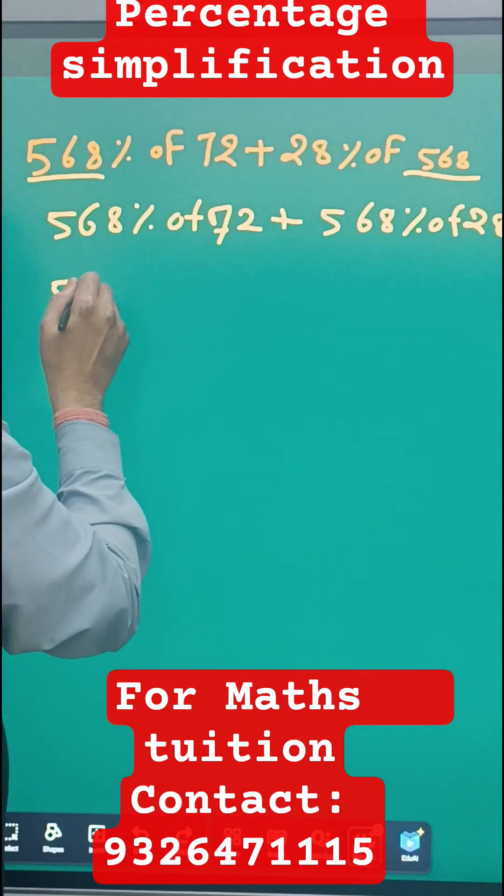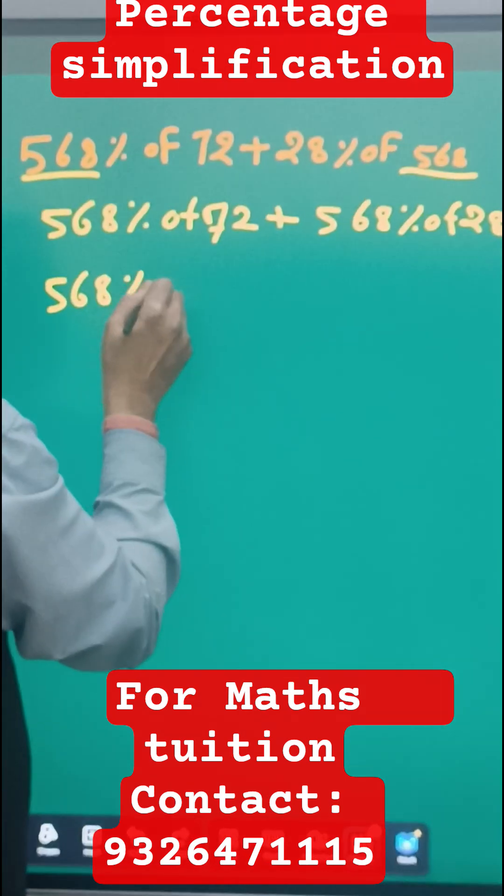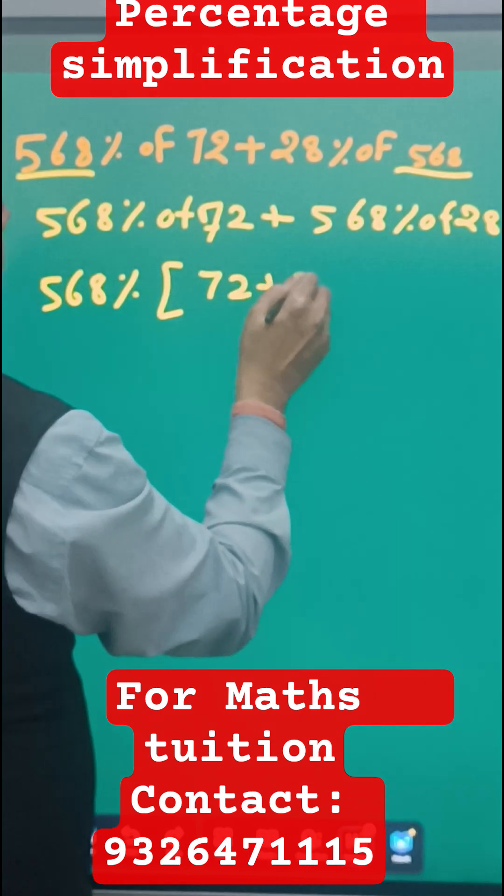And then take the 568% common, then you will be having 72 plus 28.